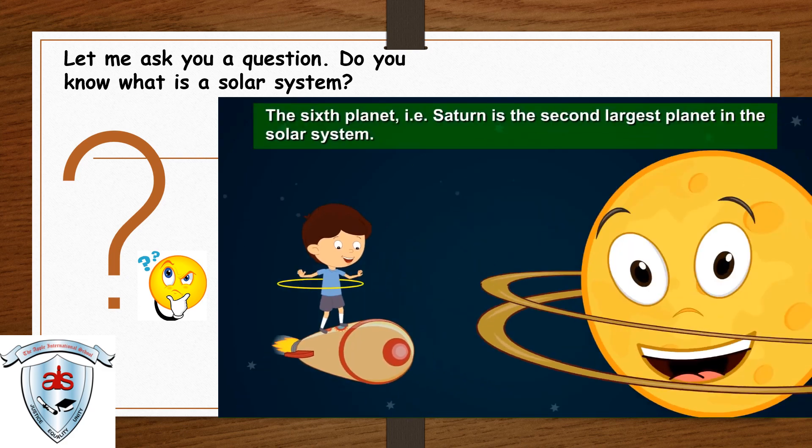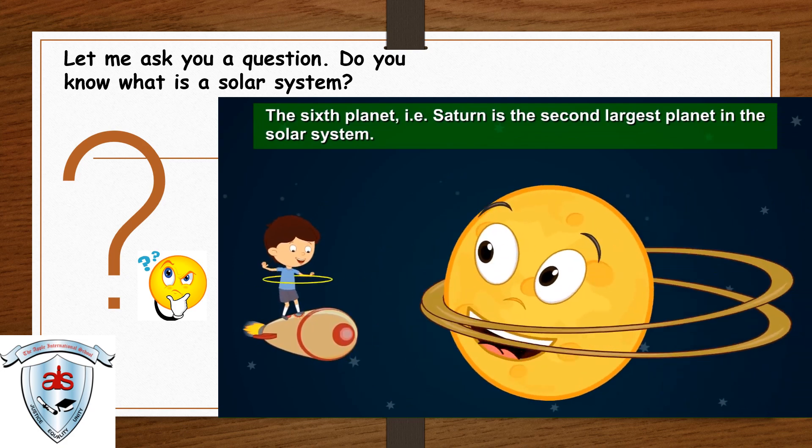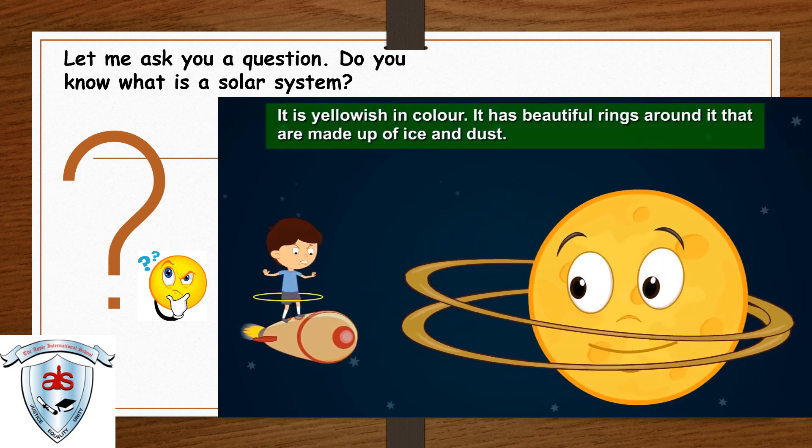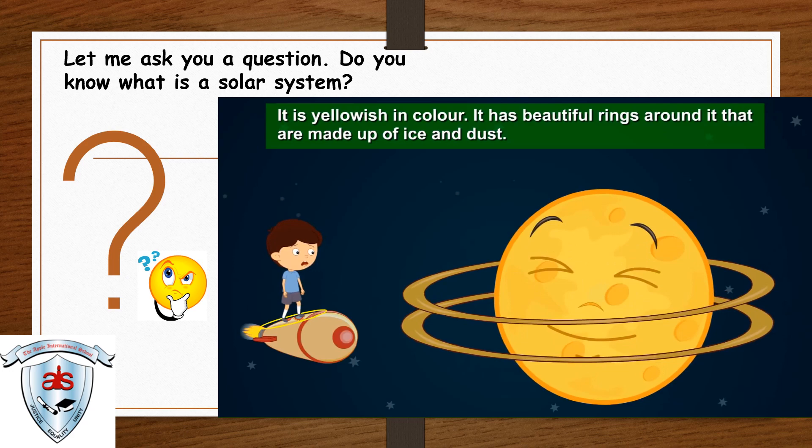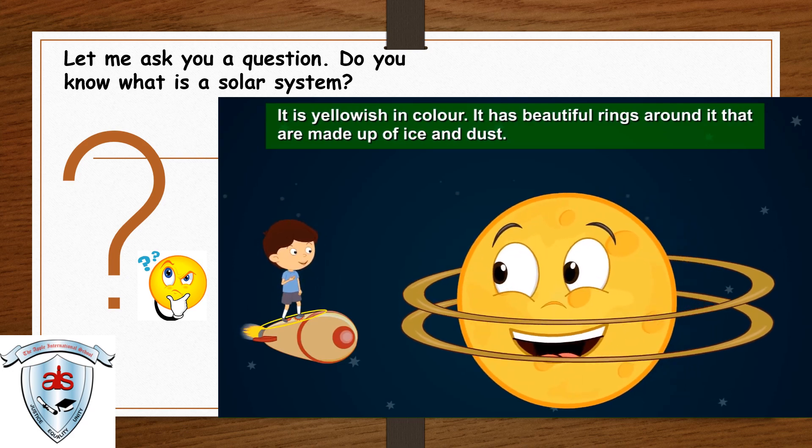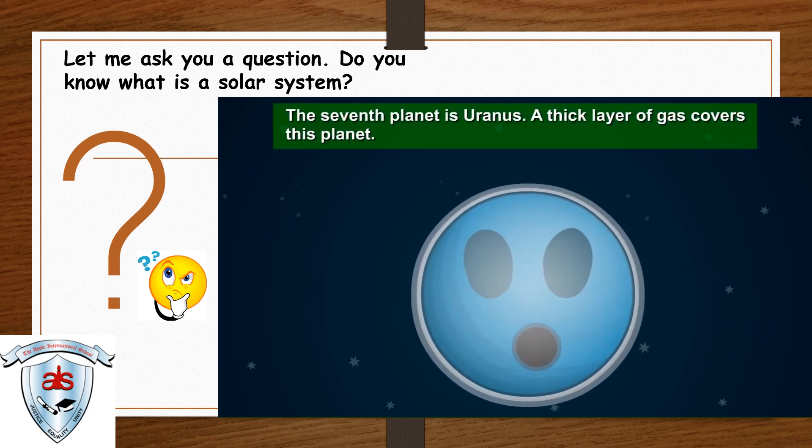The sixth planet, that is Saturn, is the second largest planet in the solar system. It is yellowish in color. It has beautiful rings around it that are made up of ice and dust.